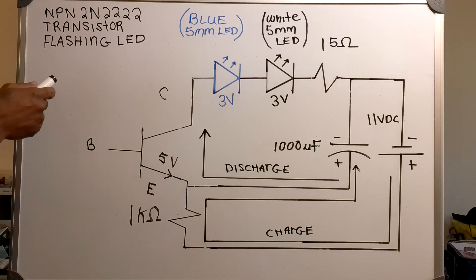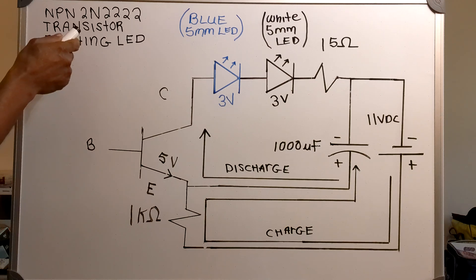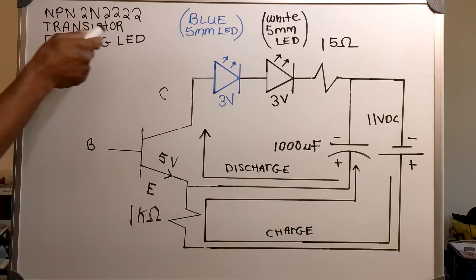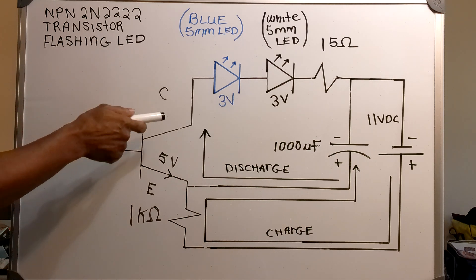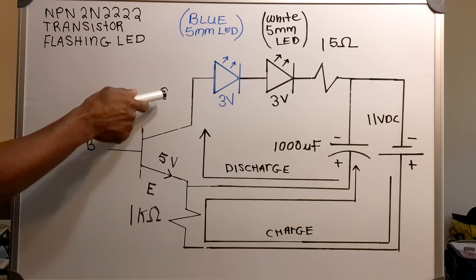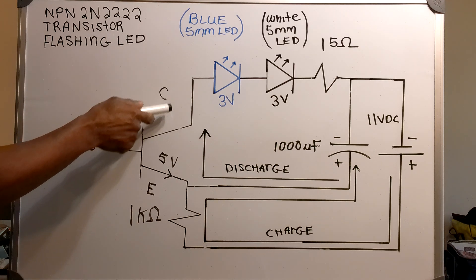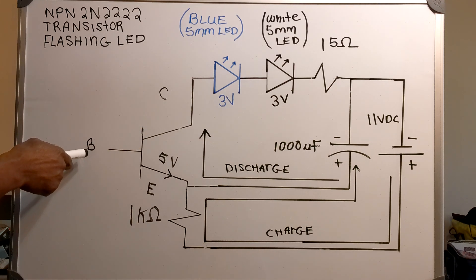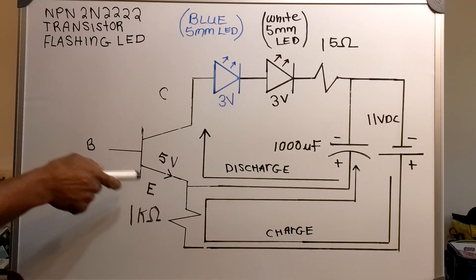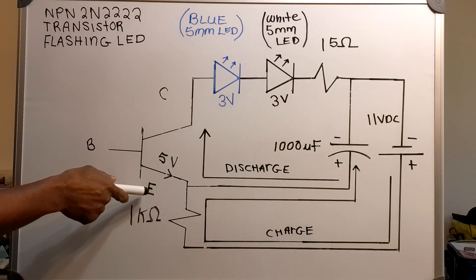In this video I have the NPN 2N2222 transistor flashing LED circuit. This is the collector side of the transistor. This is the base terminal, and this is the emitter side.